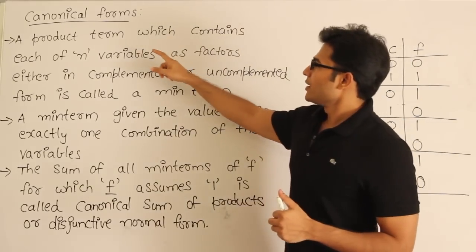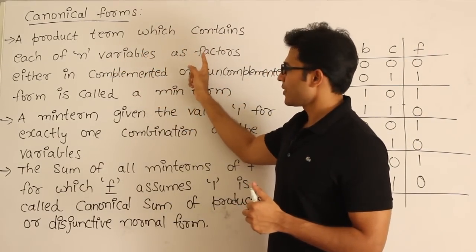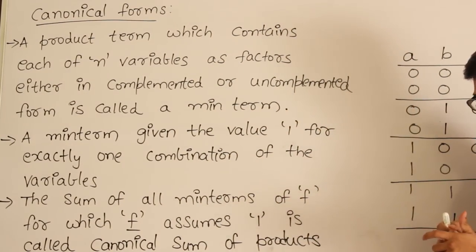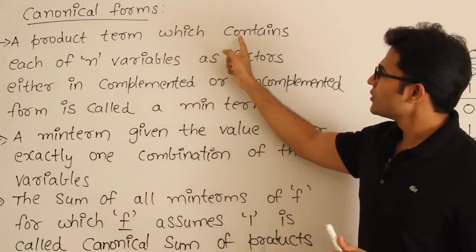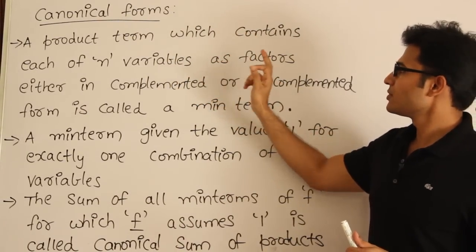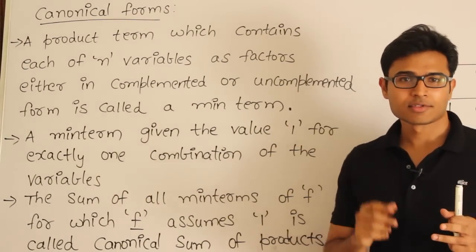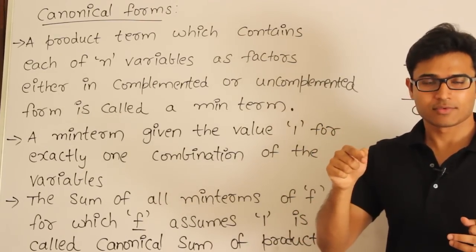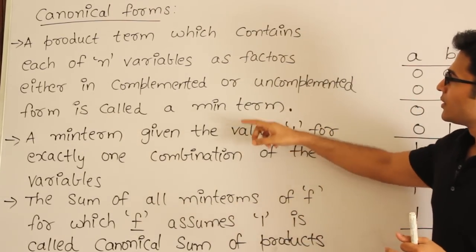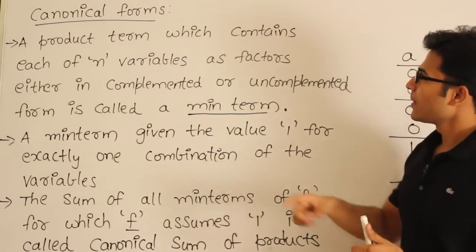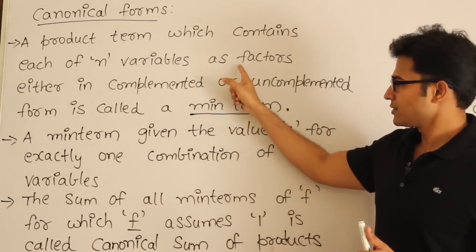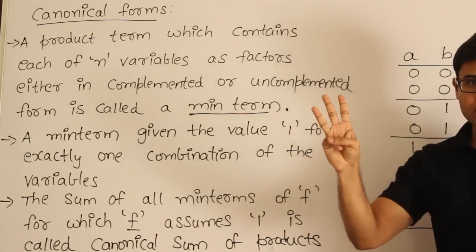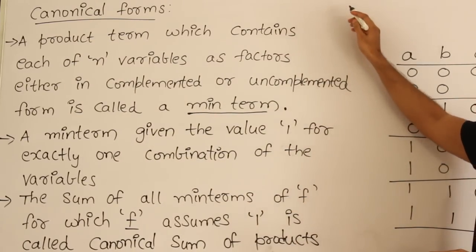A product term which contains each of n variables as factors, either in complemented or uncomplemented form, is called a minterm. A product term means a term formed using AND. It must contain each of the n variables — meaning if a function consists of three variables, then every minterm should contain all three variables. That is the definition of a minterm.